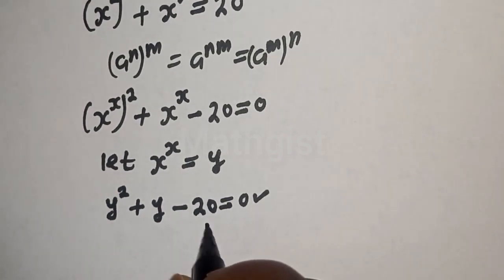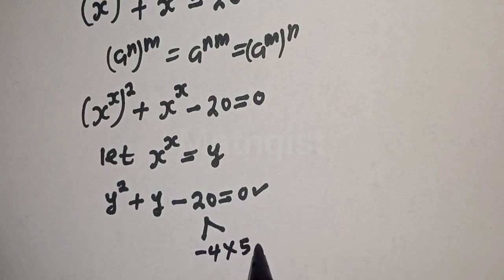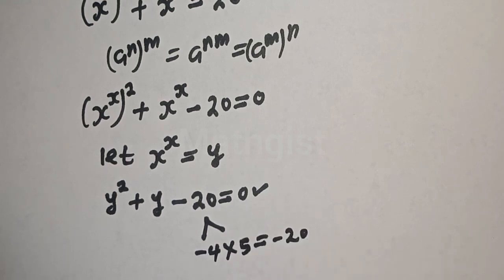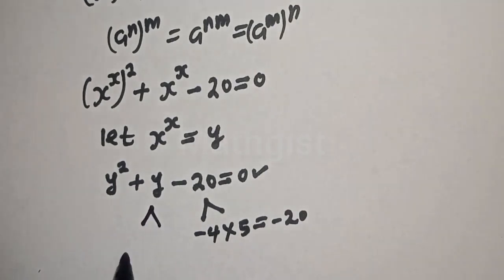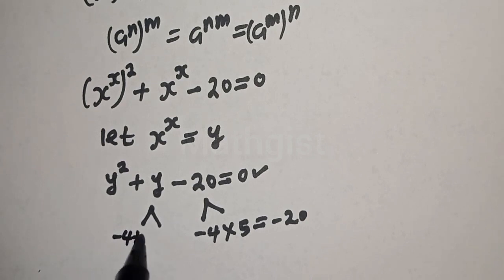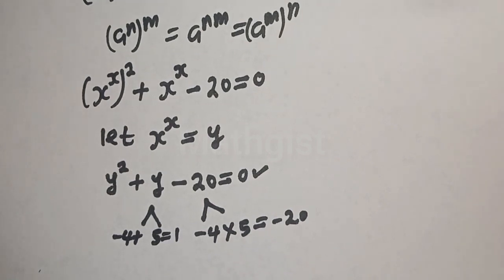For factorization, the product is minus 4 times 5, which is equal to minus 20, and the sum will be minus 4 plus 5, which is equal to 1.